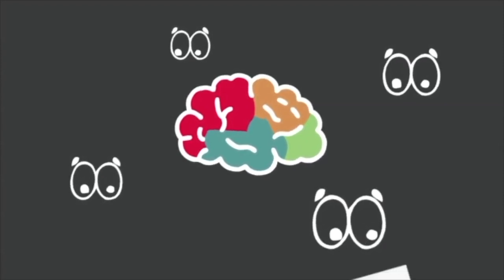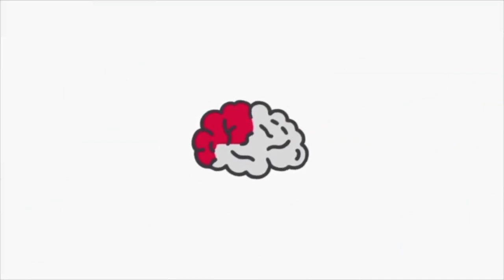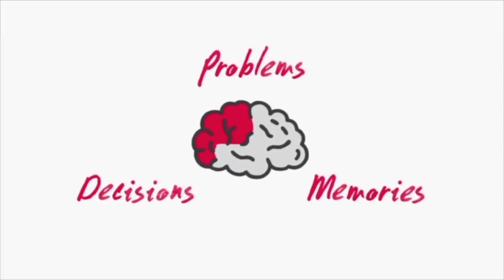Our conscious logical thinking happens in the prefrontal cortex or front brain. It's where you make rational decisions, solve problems, and understand other people and yourselves.